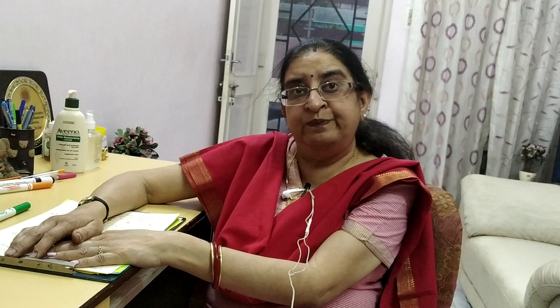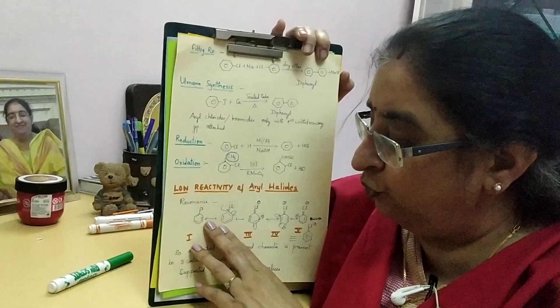Nucleophilic substitution reactions proceed via SN1 and SN2 mechanisms. Comparing aryl halides with alkyl halides, the main reason for the low reactivity of aryl halides as compared to alkyl halides is resonance. The resonating structures of chlorobenzene are written here, taking chlorobenzene as the example.